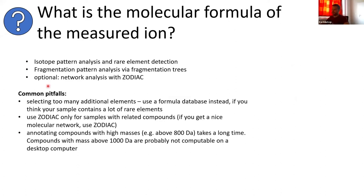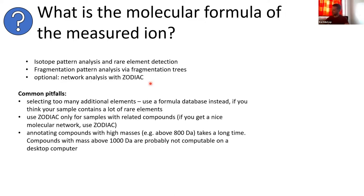Zodiac always has to be enabled manually — it only makes sense if your data comes from a biological sample where you have related compounds. If you have a set of standards which are just a mixture, you cannot assume they are related, and then it doesn't make sense to build up a molecular network or do network analysis.